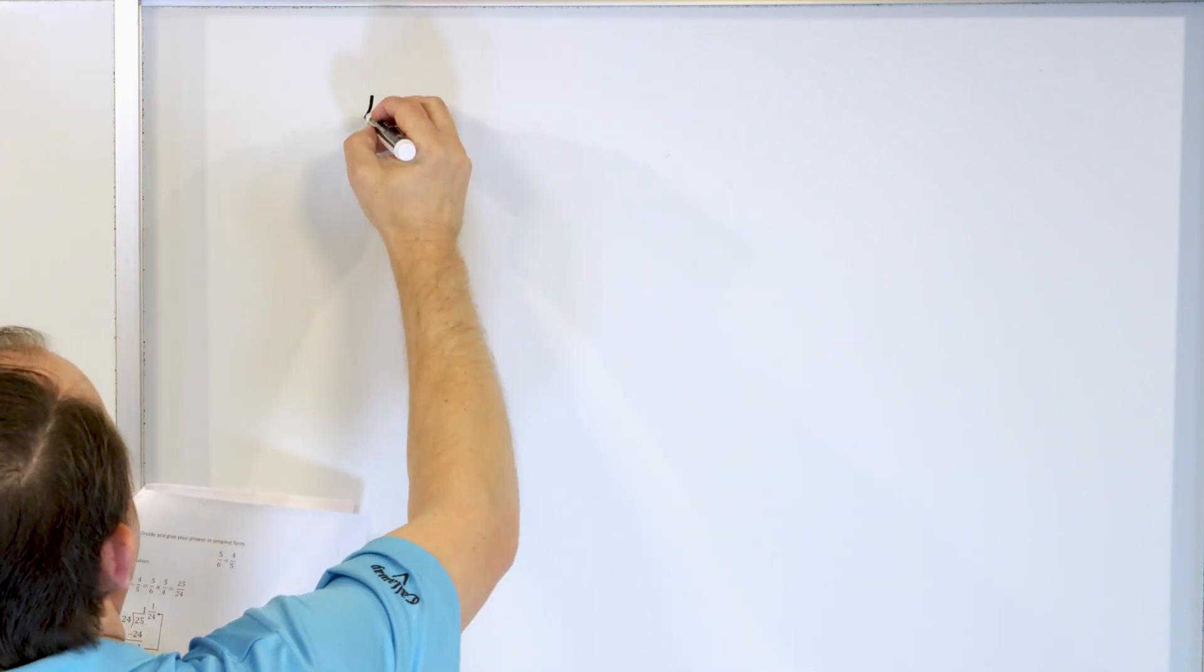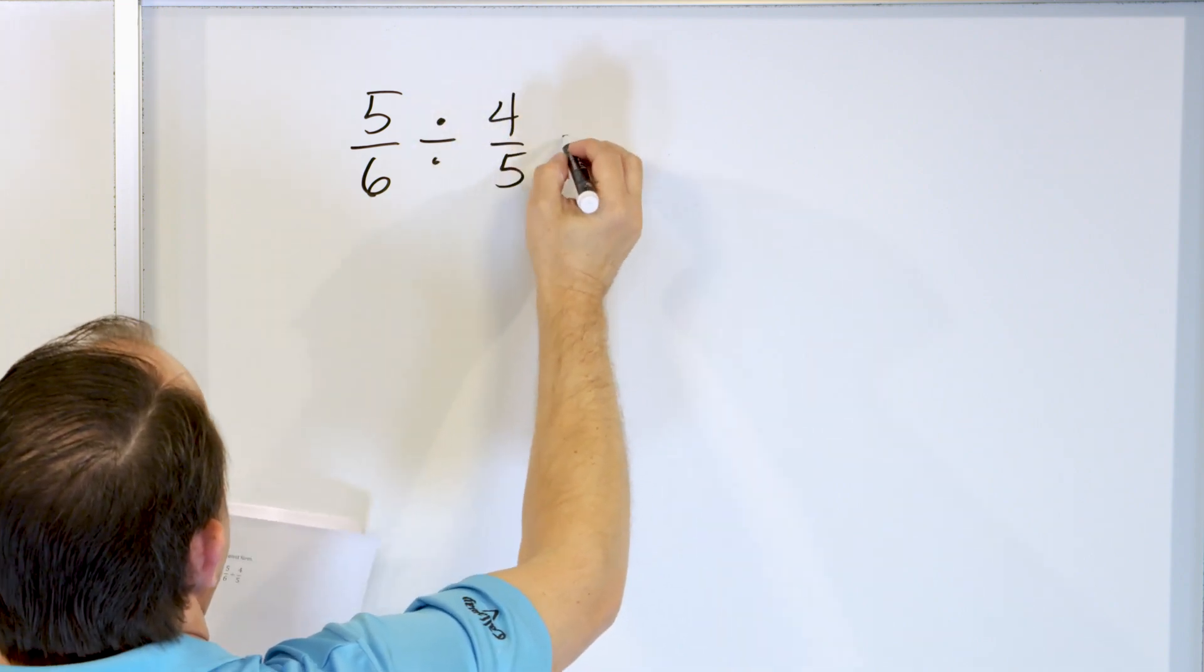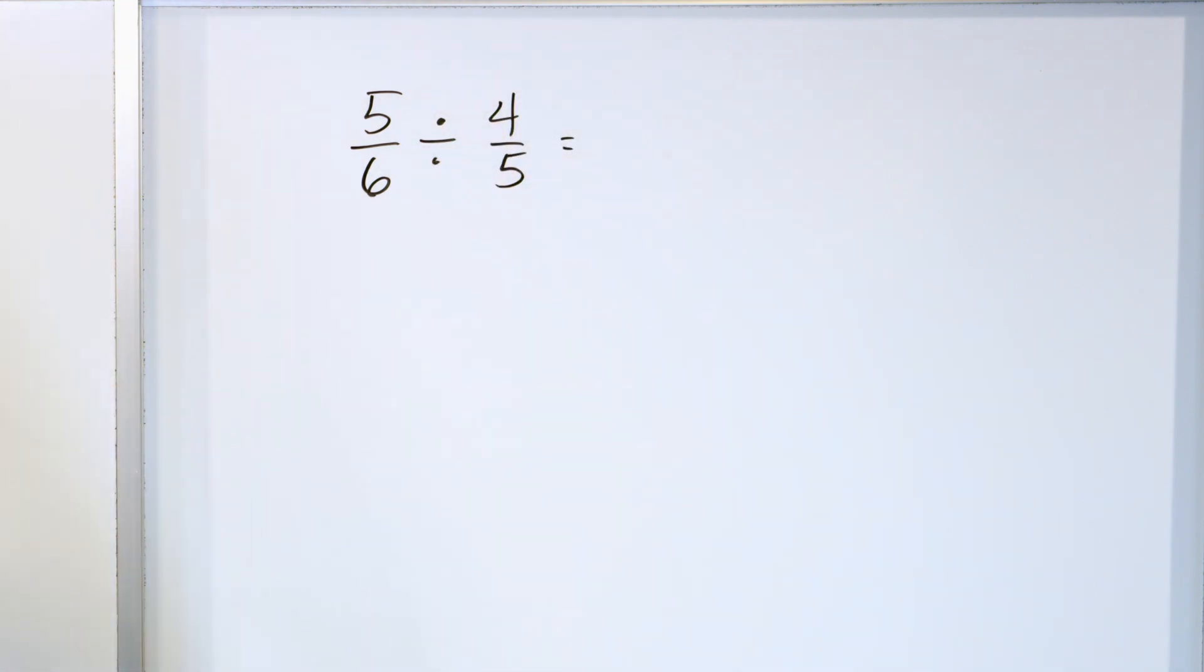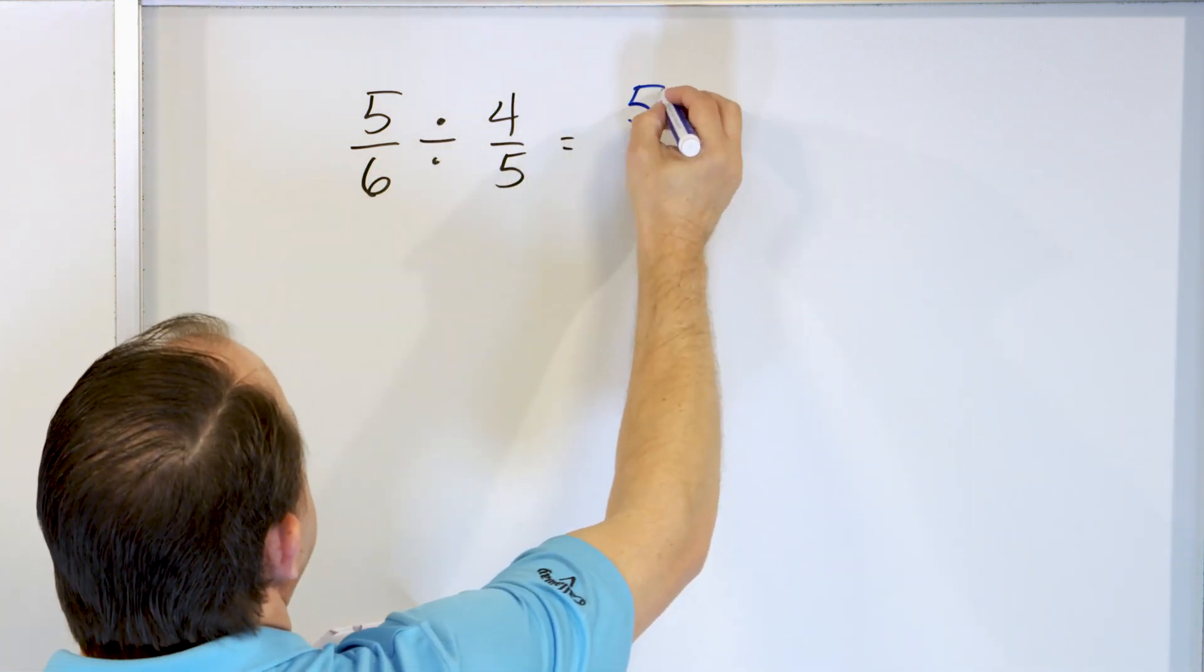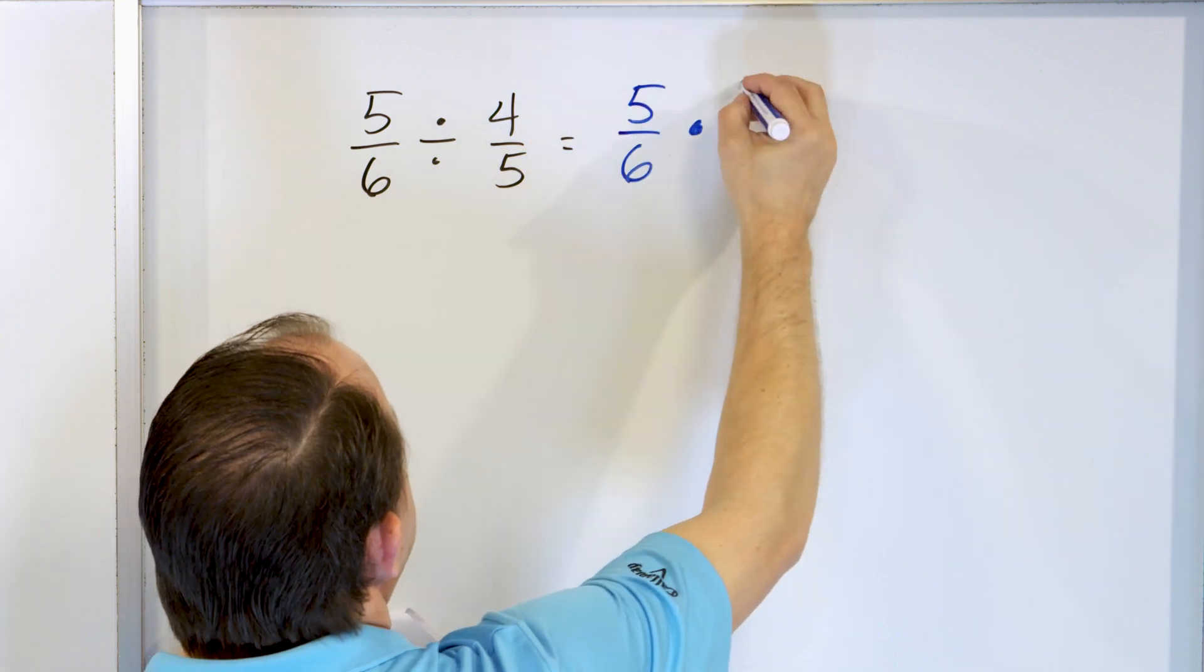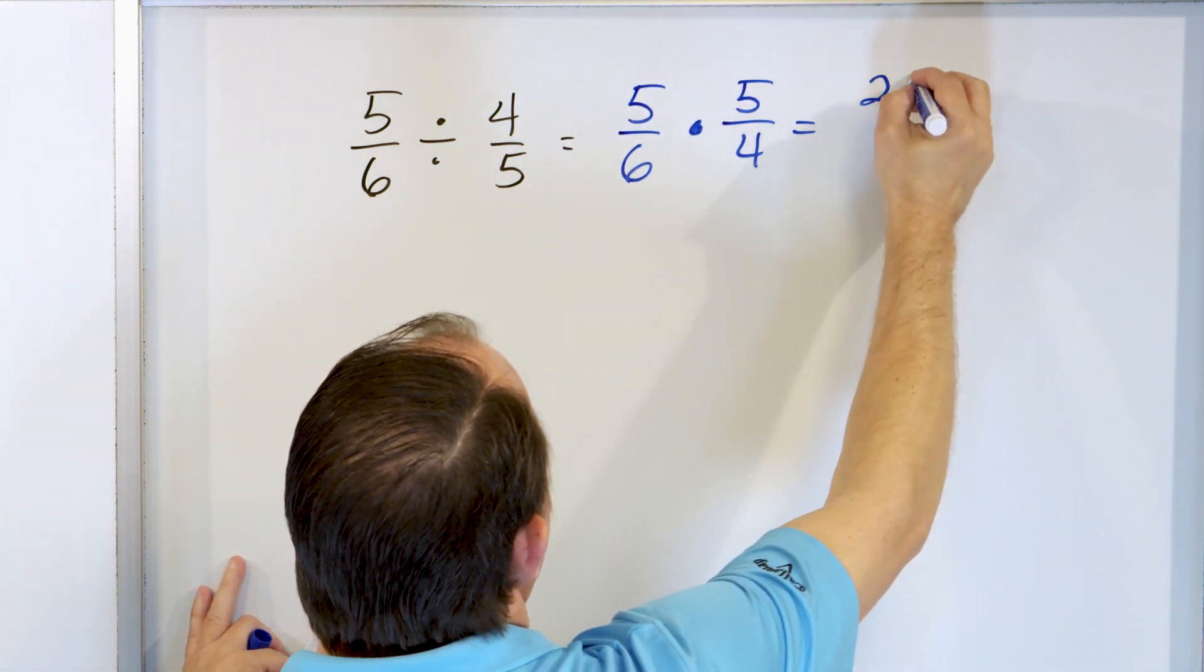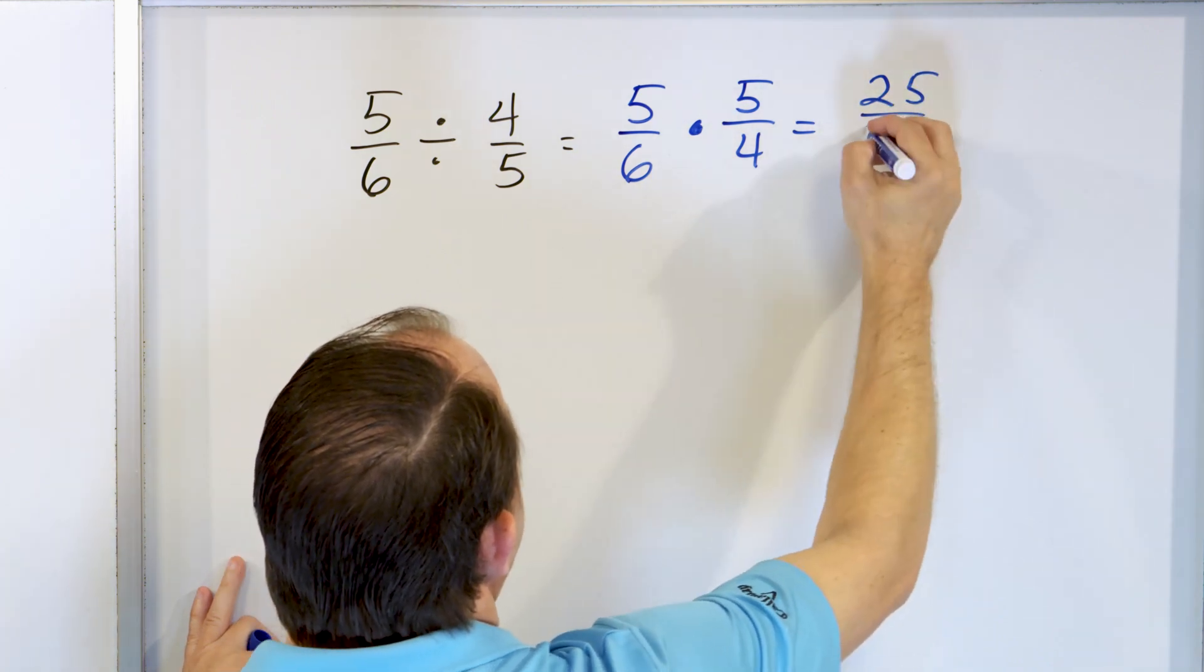We're actually almost done. Let's take a look at 5/6 and we're going to divide it by 4/5. 5/6 stays the same. The division becomes multiplication and then this gets flipped over to 5/4. Multiply. 5 times 5, 25. And 6 times 4, 24.